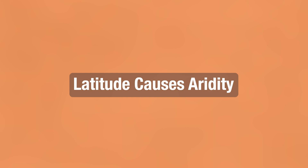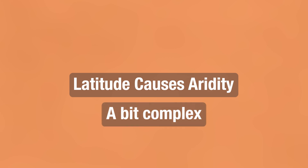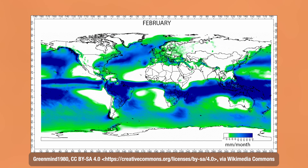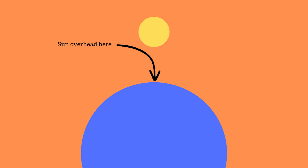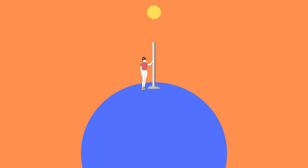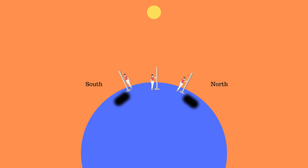Latitude causes dry places. This is a huge factor in causing aridity, and looking at annual precipitation worldwide, it clearly has a big impact. The sun is always directly overhead somewhere; at that one point, a pole held upright would cast no shadow. If you sent two friends a thousand kilometers away on the same longitude — one north, one south — the northward friend sees a shadow to the north of their pole, and the southward friend sees a shadow to the south.